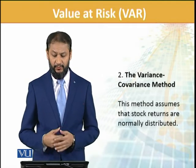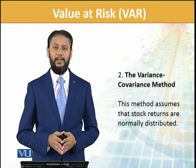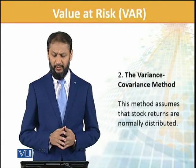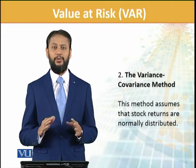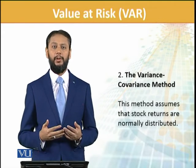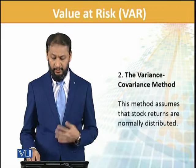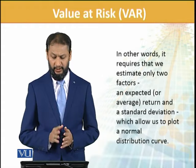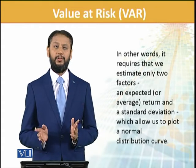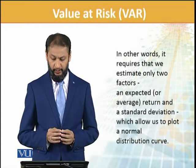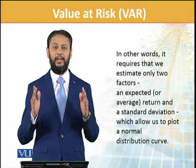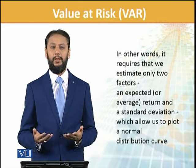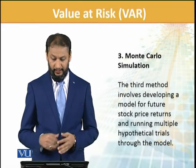Then another method which we discussed is variance-covariance method, jisko analytical method bhi kehte hain. This method assumes that stock returns are normally distributed — ke unki distribution normal hai. Toh us base pe hum inko calculate karenge, percentage mein bhi aur value mein bhi. In other words, it requires that we estimate only two factors: expected return and standard deviation. We plot them, unka curve banaate hain, and then we see the lower tail — ke woh tail pe kitna risk hai — aur usko hum apne factor mein built-in kar lete hain.